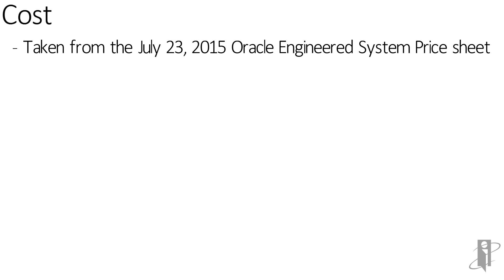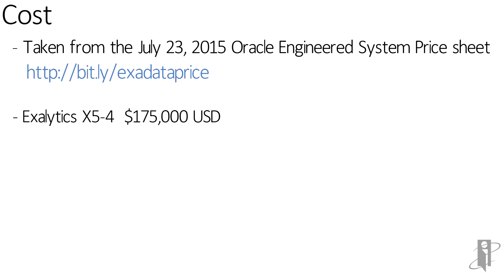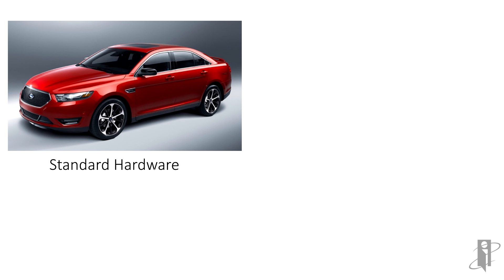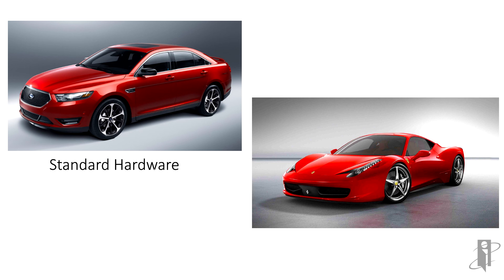The cost is quite reasonable. The Exalytics X5-4 is approximately $175,000 for the machine, and the T5-8 is $330,000. There are additional costs for software and support, and discounts may be available — these are list prices. Even trying to get commodity hardware with the same specs, you would come close to these prices if not exceed them. Compared to standard on-premise software and hardware, Exalytics is like driving a Ferrari versus a standard car — better speed, better performance, better scalability. It's highly recommended and well worth the price.